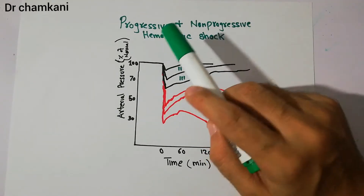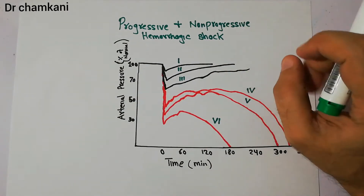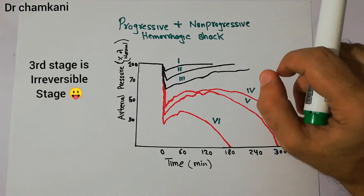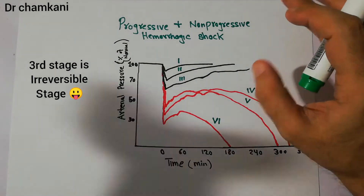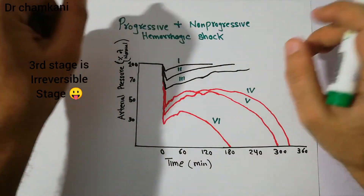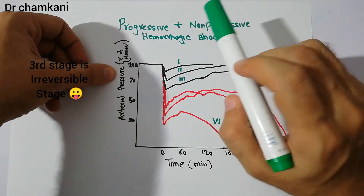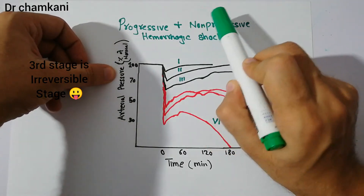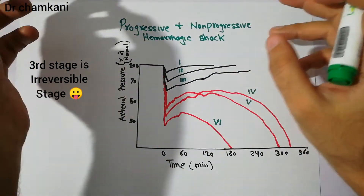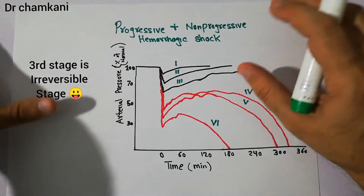Hemorrhagic shock is basically a kind of hypovolemic shock, which is due to a decreased volume of blood in the body. Today we are going to discuss the point at which non-progressive shock converts into progressive shock, and what is the importance of arterial pressure and treating the shock on time.